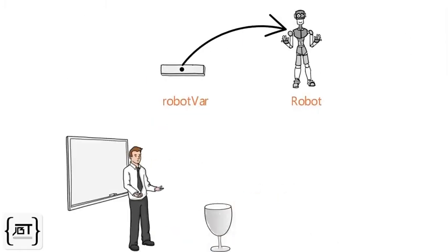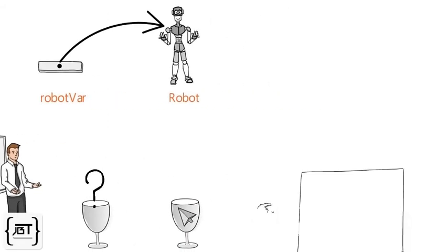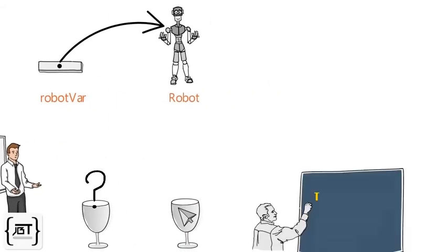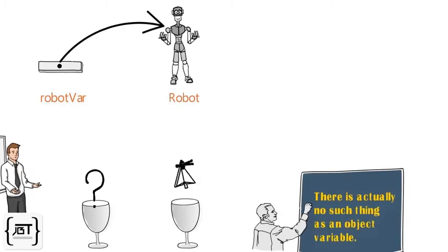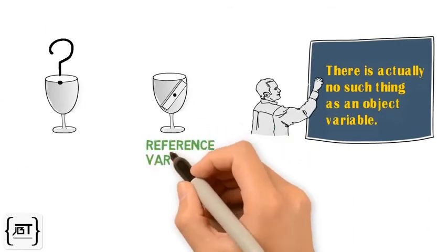But what is the value of the variable here? What does it hold? Does it hold the object itself, or something like a pointer to the object? There is actually no such thing as an object variable. There is only an object reference variable.